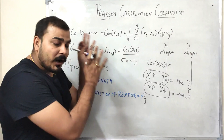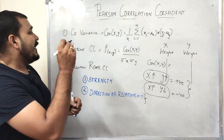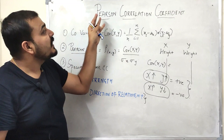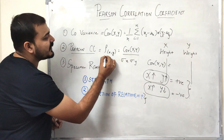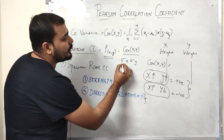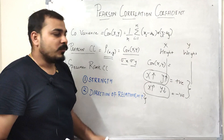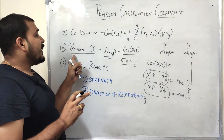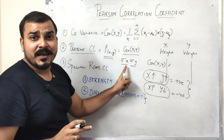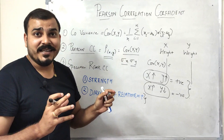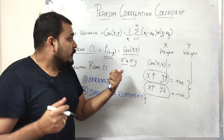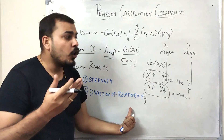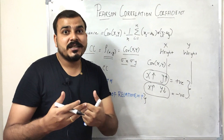Now let's look at today's most important topic: Pearson correlation coefficient. It is denoted by the symbol rho, and is defined as the covariance of X and Y divided by the standard deviation of X multiplied by the standard deviation of Y. So to find Pearson correlation coefficient, we are simply dividing covariance(X, Y) by the standard deviations of X and Y.